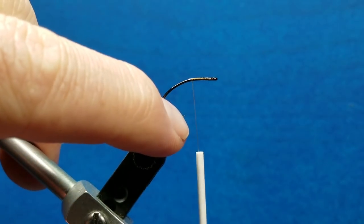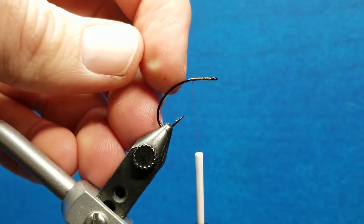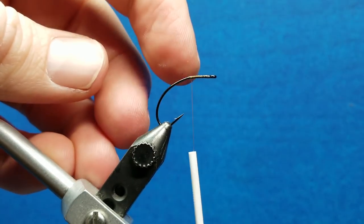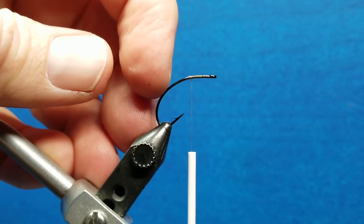We're also going to use this hook point here as an index point, so everything we do for the abdomen is going to occur here or behind that hook point and the front of the fly is going to be in front of it.